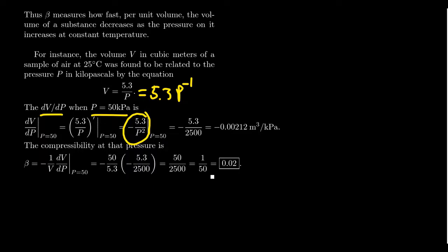If we evaluate the derivative at 50 kilopascals, you're going to end up with 50 squared in the denominator, which is 2,500. You get negative 5.3 over 2,500, which is going to compute out to be negative 0.00212 cubic meters per kilopascal.